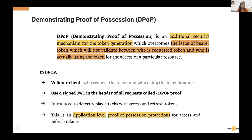DPoP is an additional security mechanism implemented on top of the existing OAuth2 or OpenID Connect flow. It was introduced to detect replay attacks on access tokens and refresh tokens, and it is an application-level security mechanism to secure those tokens.